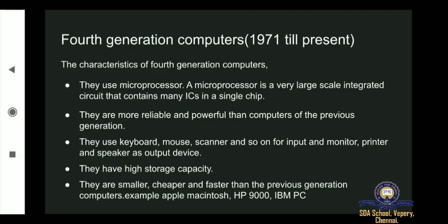Fourth generation computers are more reliable and powerful than computers of the previous generation. The microprocessor is very fast because it contains lots of ICs in a single chip. They are more effective and efficient for all sorts of work. They use keyboard, mouse, scanner, and so on for input, and monitor, printer, and speaker as output devices — more options than the third generation's keyboard and monitor only.